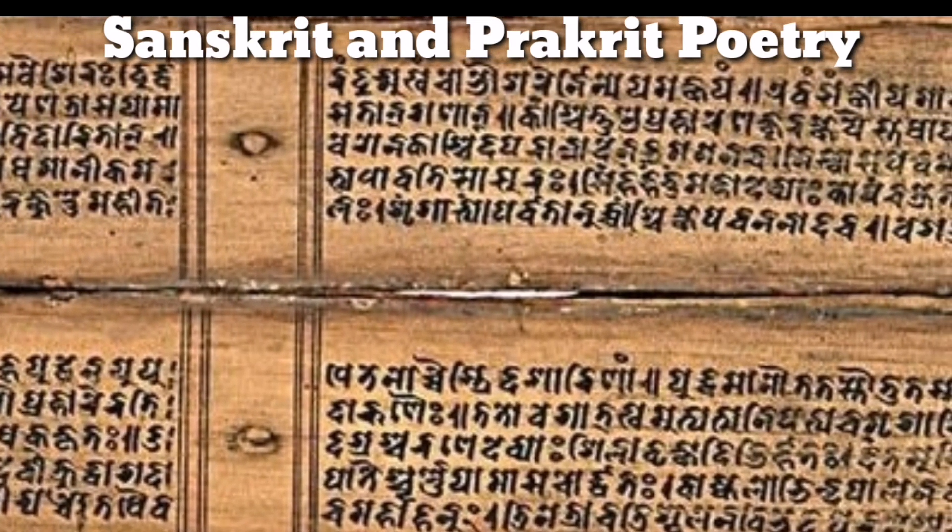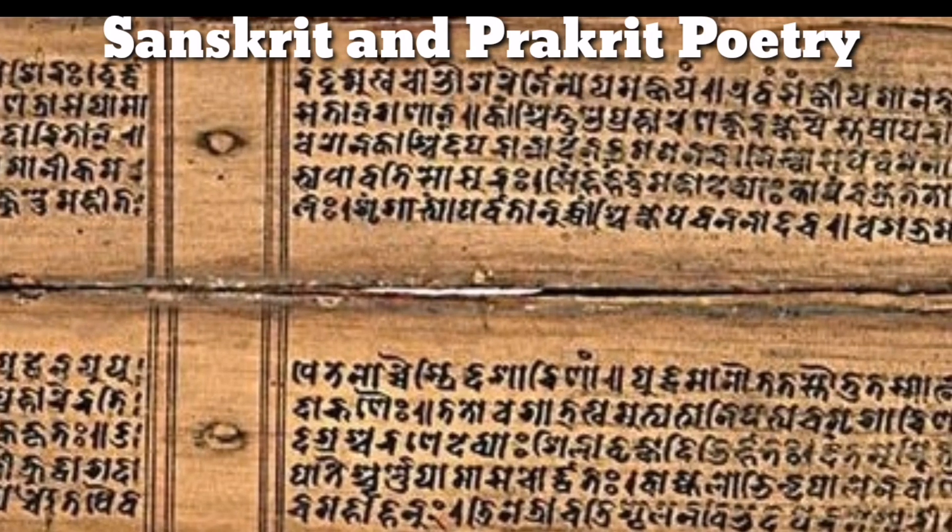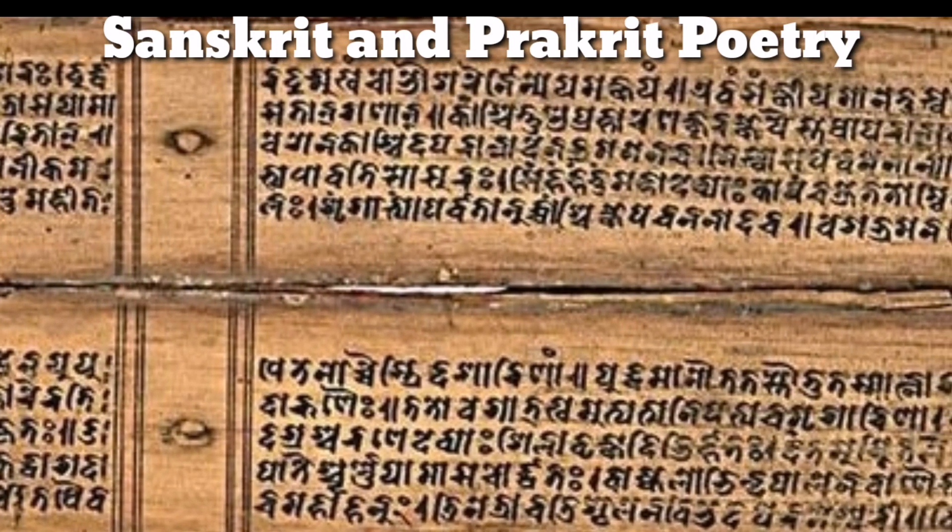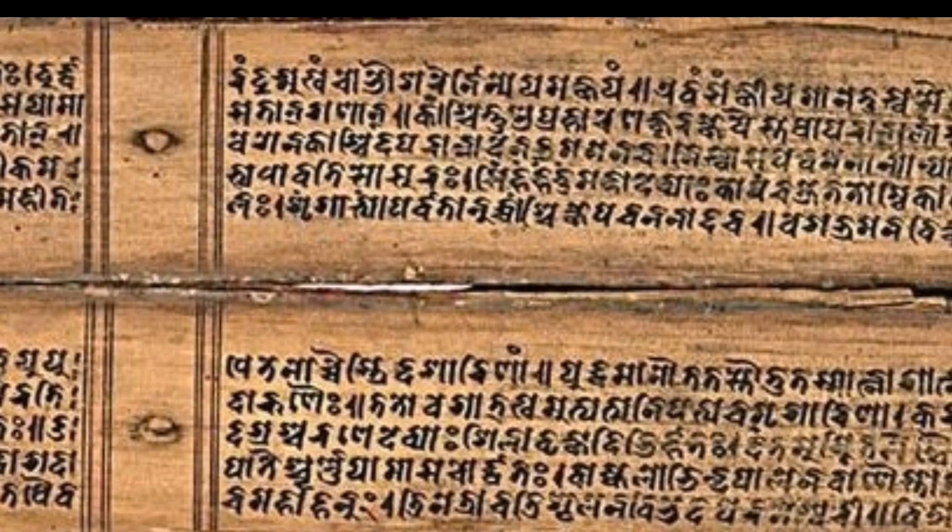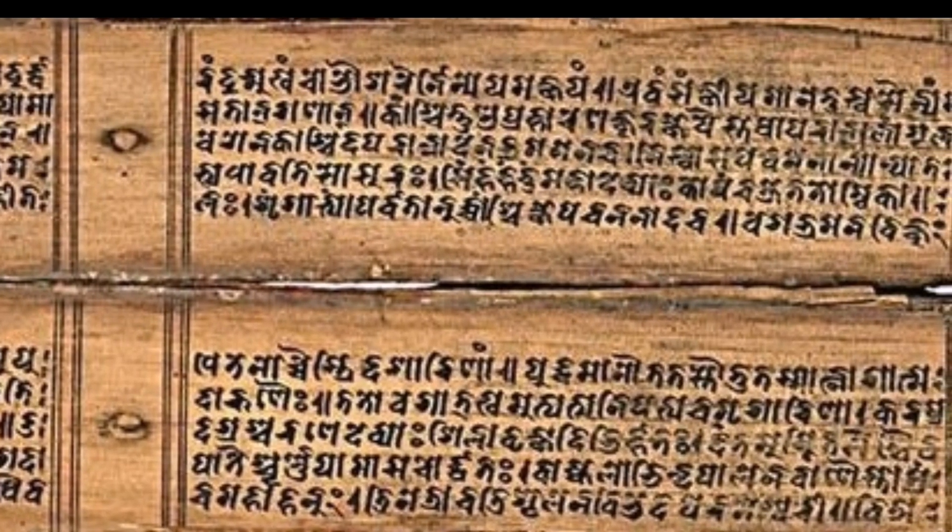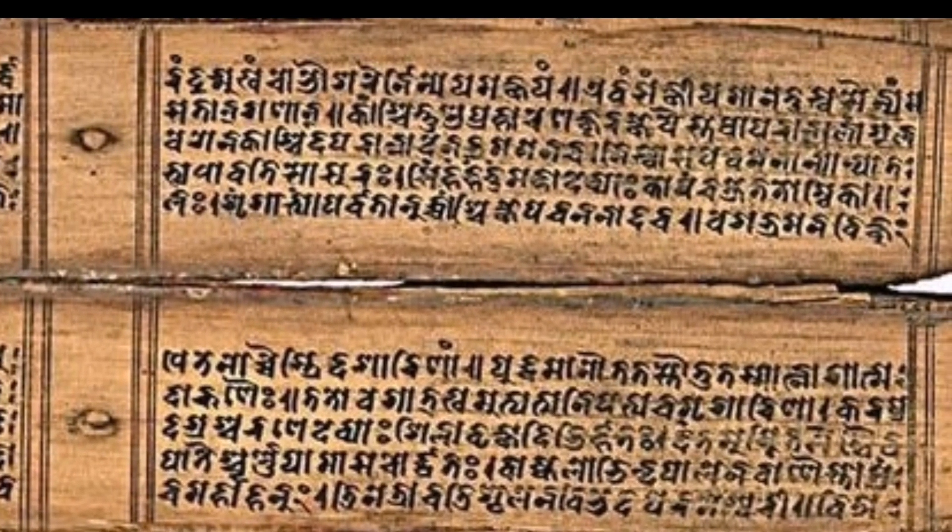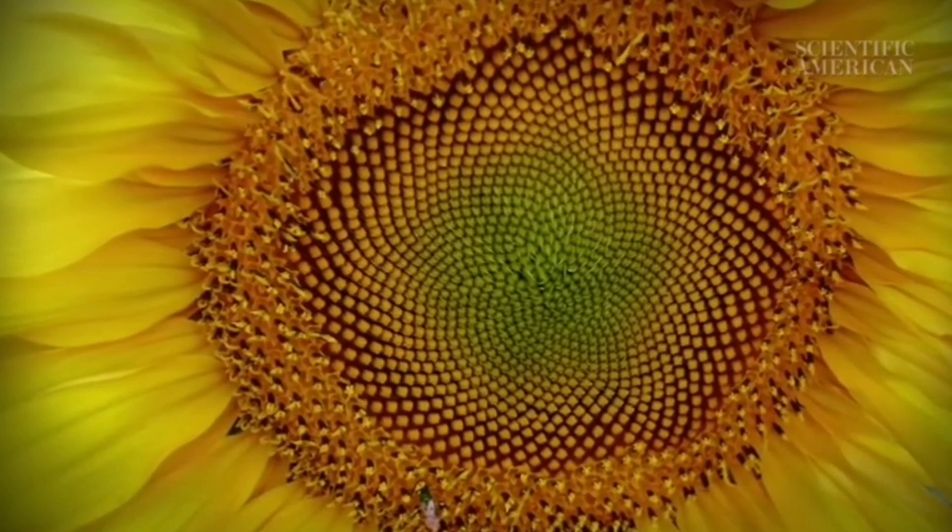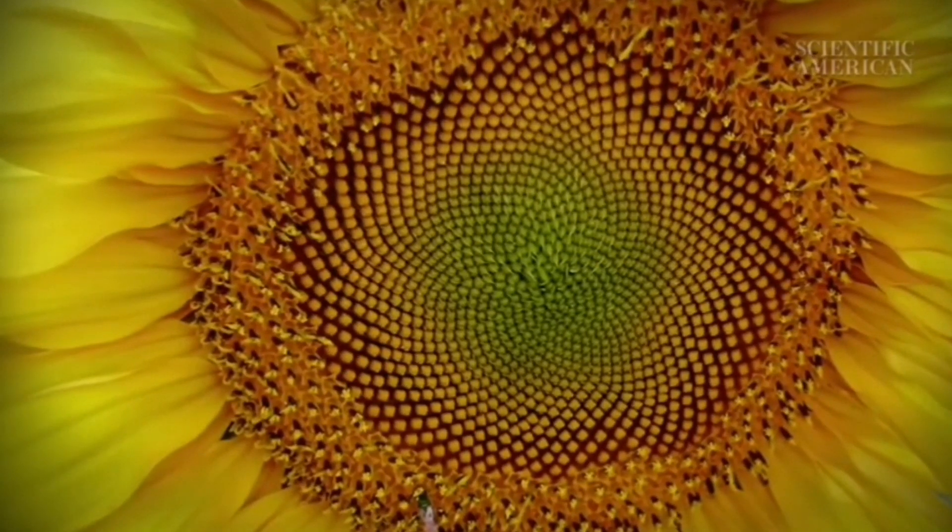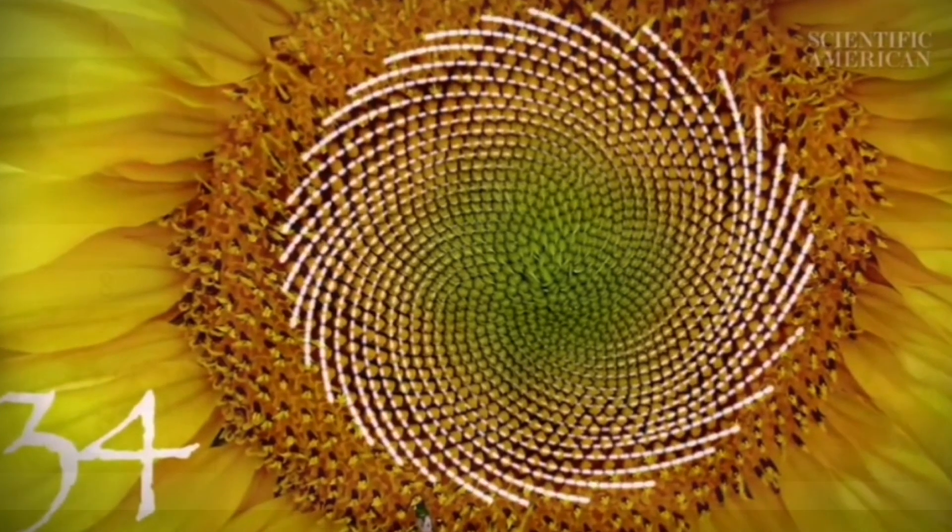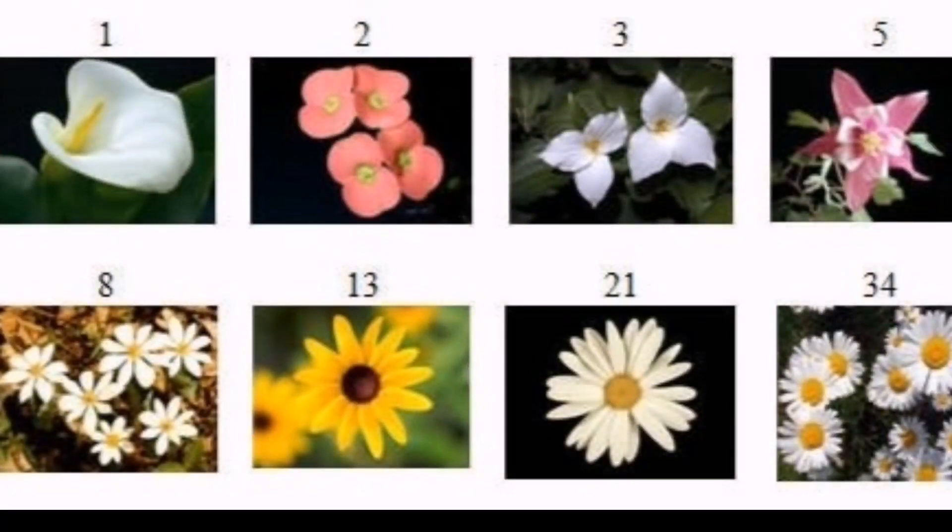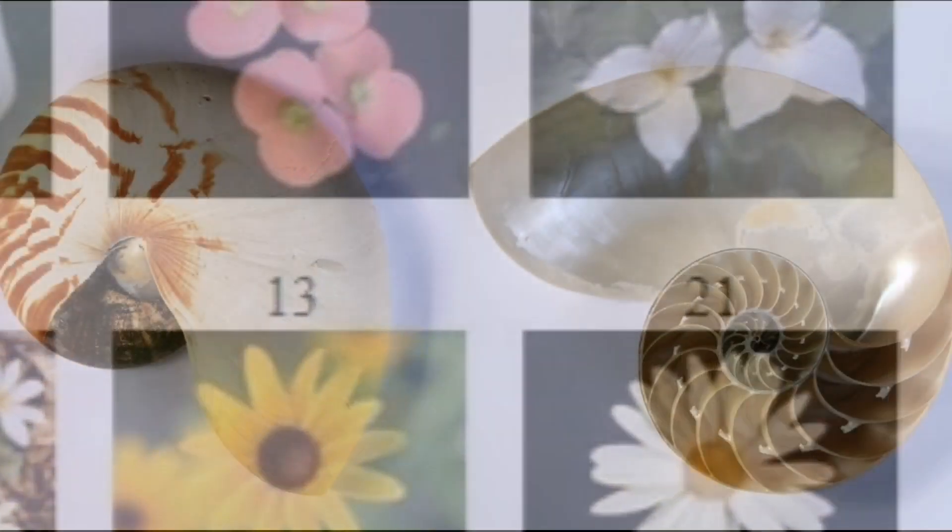Fibonacci sequence has many interesting properties. Among these is that this pattern is very visible in nature. Some of nature's most beautiful patterns like the spiral arrangement of sunflower seeds, the number of petals in a flower, and the shape of snail shell.